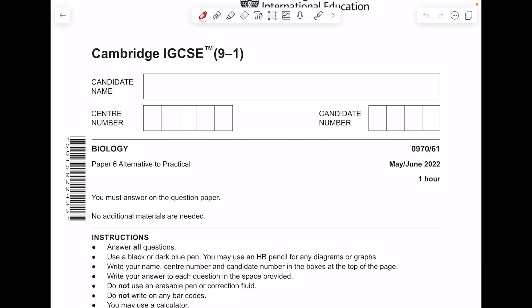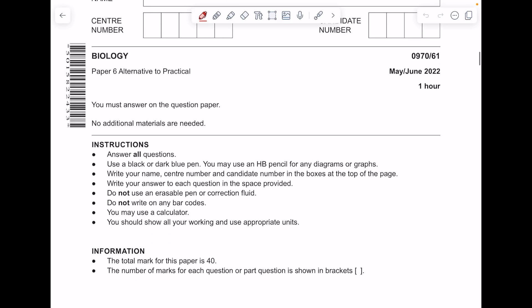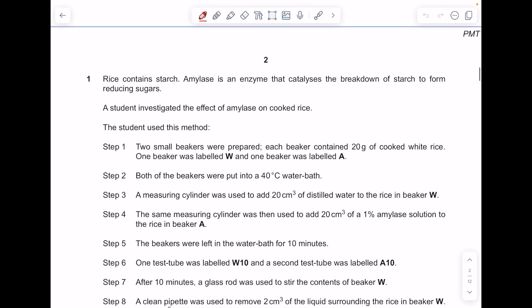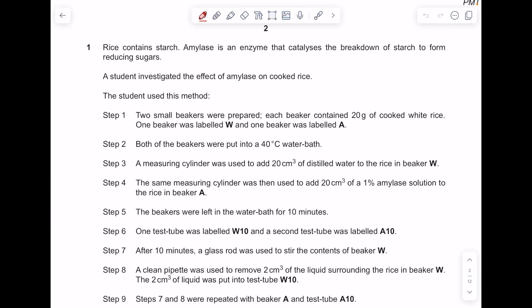This is a Cambridge IGCSE Biology Paper 6 Alternative to Practical Talk 3 from June 22. Rice contains starch. Amylase is an enzyme that catalyzes the breakdown of starch to form reducing sugars.